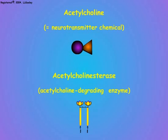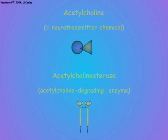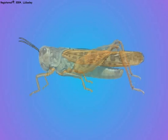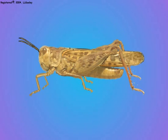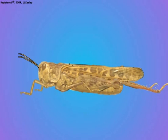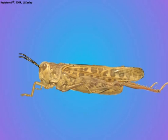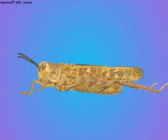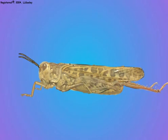Acetylcholine and acetylcholinesterase are important for their relationships with the toxic actions of some insecticides. In the next scene, we shall demonstrate how disrupting nervous functions causes the twitching symptoms that are characteristic of poisoning by many of the commonly used insecticides.